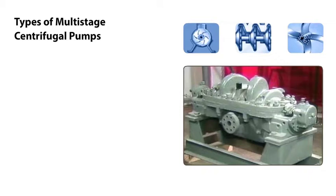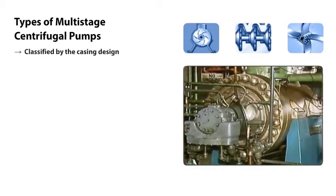Centrifugal pumps can be classified in several ways. One way is by the design of the pump's casing. We'll be looking at two types of centrifugal pumps that can be classified by how their casings are split so that they can be open for maintenance.